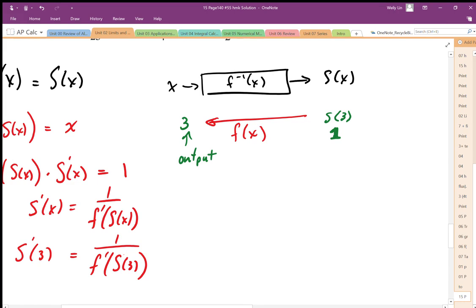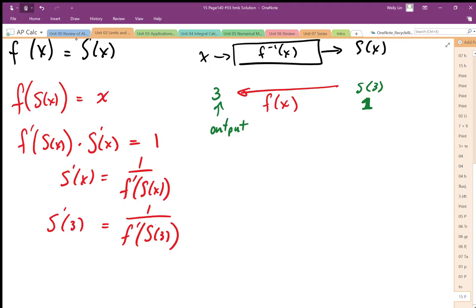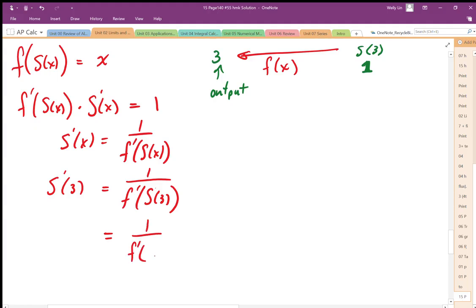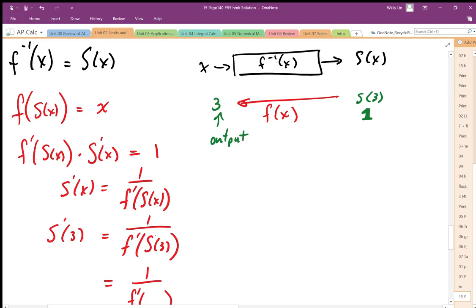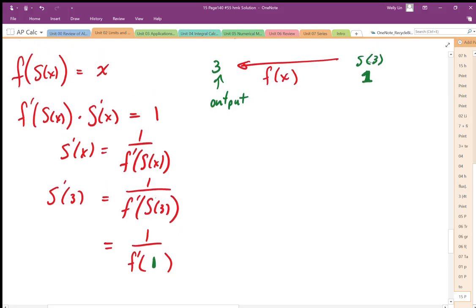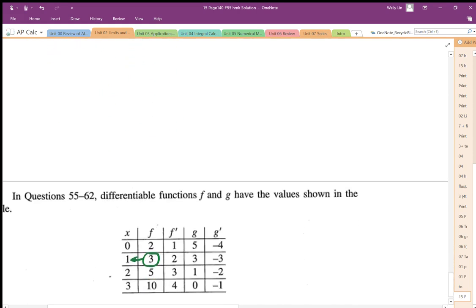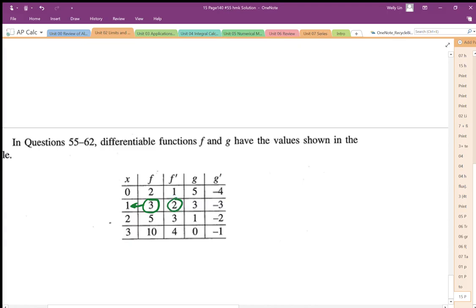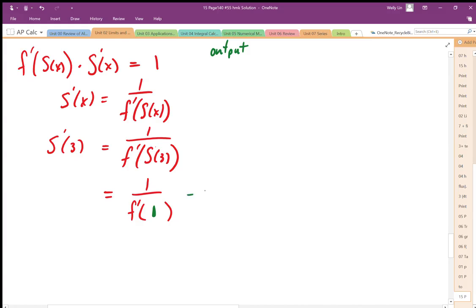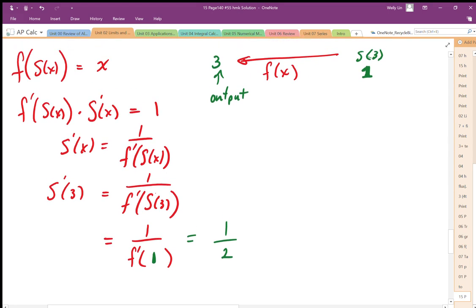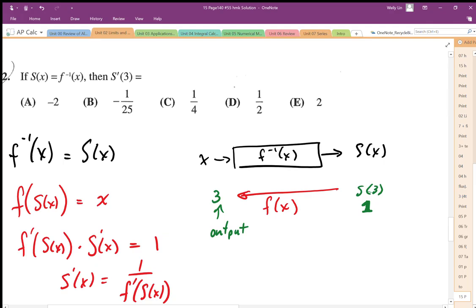So now I can replace that s of 3 with the appropriate number, then I can apply it to my table again. So 1 over f prime of s of 3, by working backwards and using the f function, not the inverse, I get a value of 1 for s of 3. That means now I can go back to my table and look for f prime of 1. My table shows f prime of 1 is equal to 2. So then this is equal to 1 over 2. So the derivative or slope value at x equals 3 of the s function is 1 half. So the answer is D.